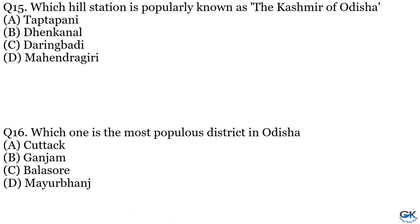Question No. 15: Which hill station is popularly known as the Kashmir of Odisha? Option A: Taptapani. Option B: Dhenkanal. Option C: Daringbadi. Option D: Mohendragiri. The answer is Option C, Daringbadi.